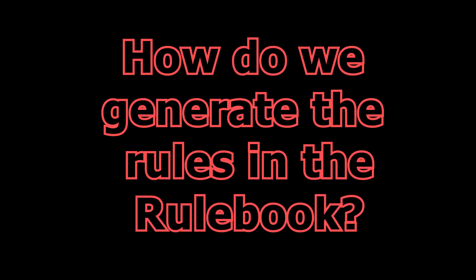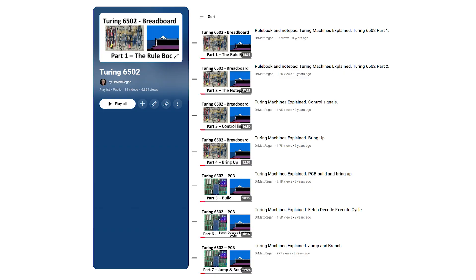At this point, you might be wondering, how exactly do we generate the rules in the rulebook that allow us to emulate the 6502 instruction set? Well, I've got some good news and some bad news. The bad news is, that's a 4 hour discussion. The good news is that I've already covered it in detail in the Turing 6502 playlist on this channel.